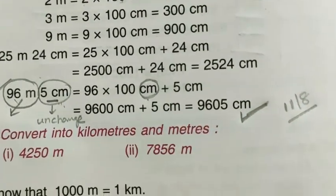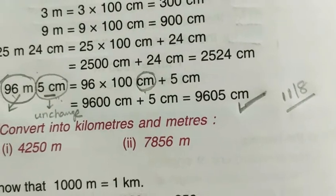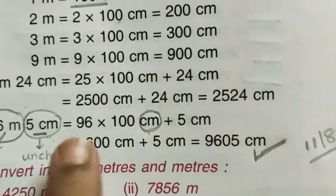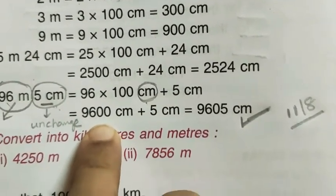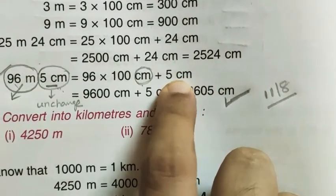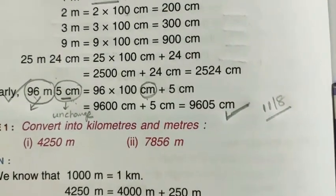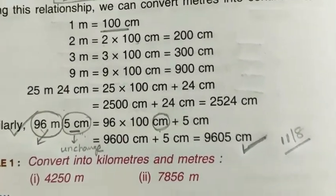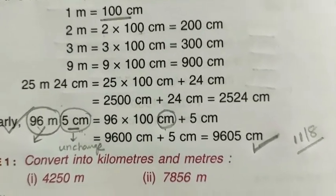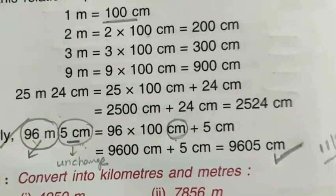When we multiply by one hundred, the meters are converted into centimeters. So 96 meters becomes 9600 centimeters, and there is a remaining 5 centimeters, so simply add them together. To convert meter and centimeter into centimeter: first convert the meter term into centimeter by multiplying by 100, then add the remaining centimeter part.